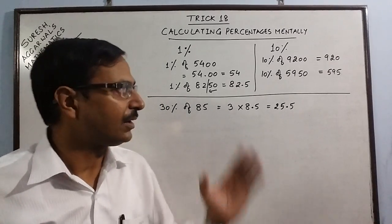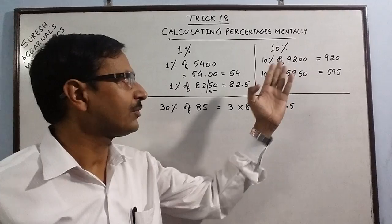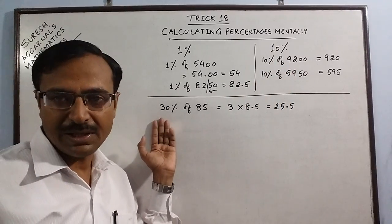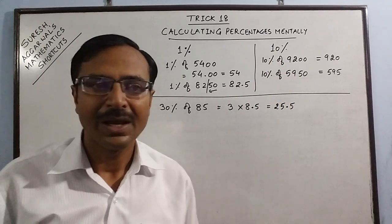You don't need to work with fractions, no cancelling, common factors. Just have the concept of 10% and multiply it by 3, you get 30%.